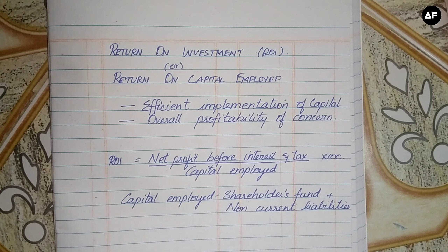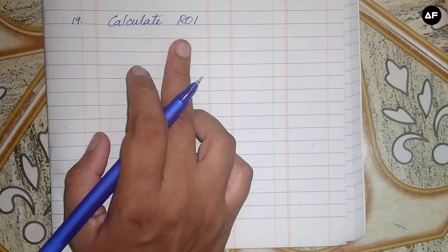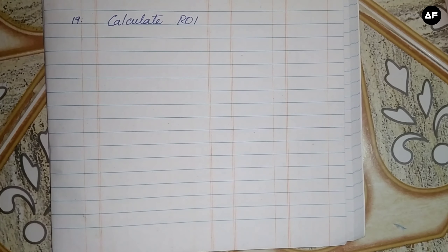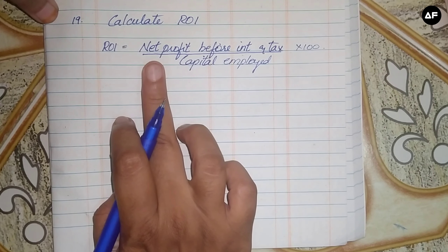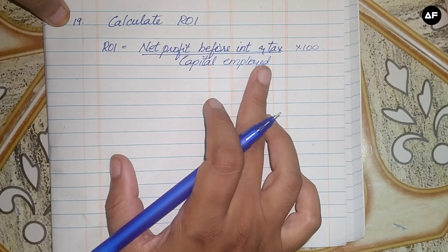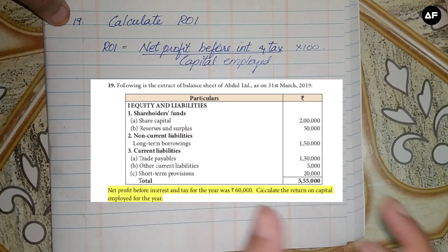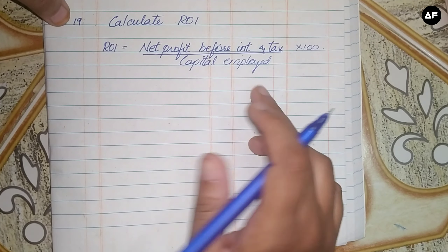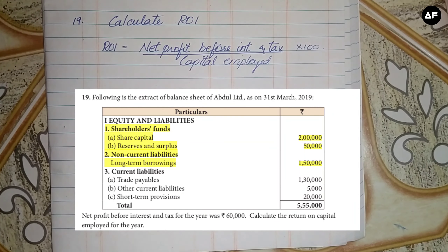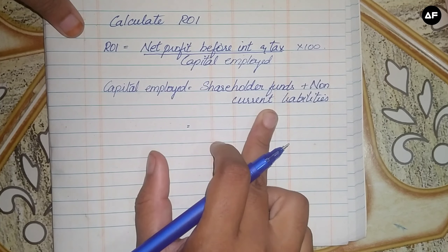In problem 19, we have to calculate the return on investment, or return on capital employed — both are the same. First, write down the formula: net profit before interest and tax divided by capital employed. Capital employed equals shareholder funds plus non-current liabilities. Let's calculate the capital employed first.